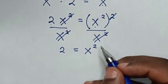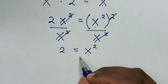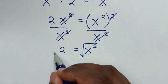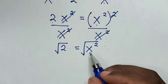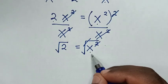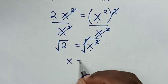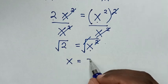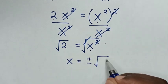Then in the next step, to find the value of x, we will apply square root on both sides. So this square root will cancel with this square. Then here it will be x is equal to plus or minus square root of 2.